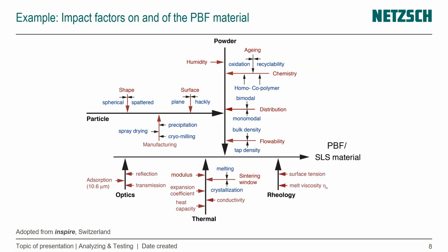For the powder bed fusion material, what's crucial is the particle — the shape, the surface, how it's manufactured. That becomes the bulk of the powder. There it's important, for example, what humidity we have, what the overall chemistry is, whether it's prone to condensation like nylon 12 powder, whether oxidation is happening, how we can recycle it, the size distribution, and how well it flows and can be coated.